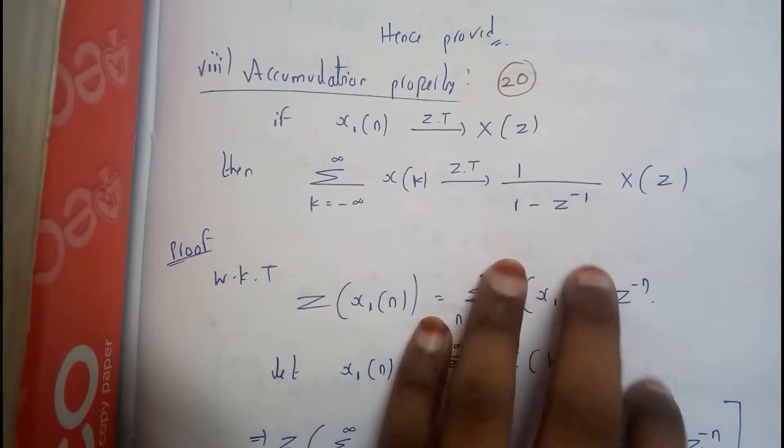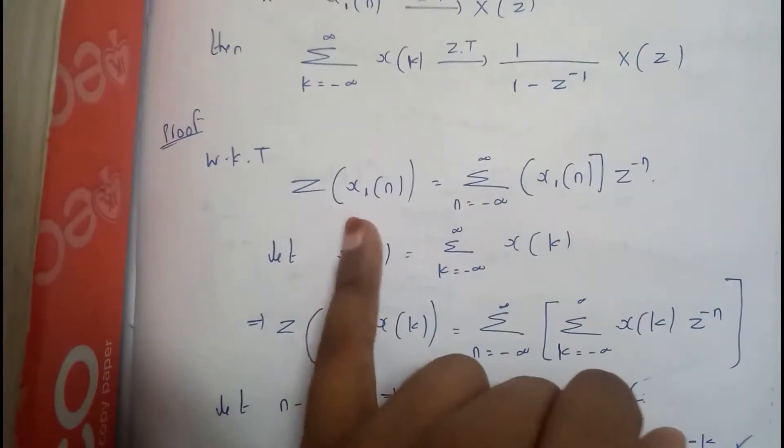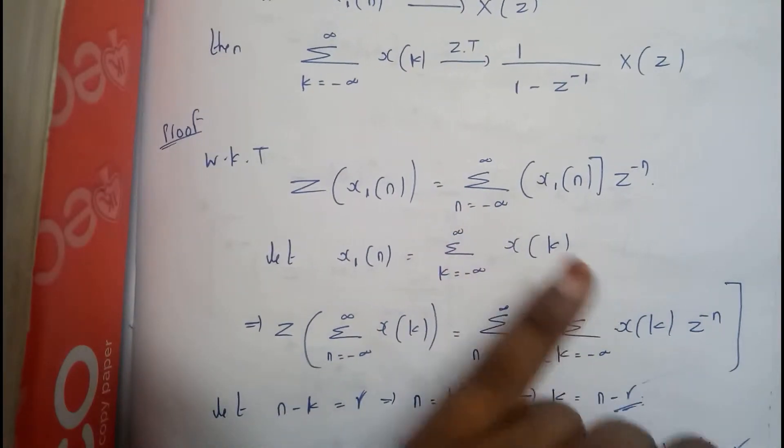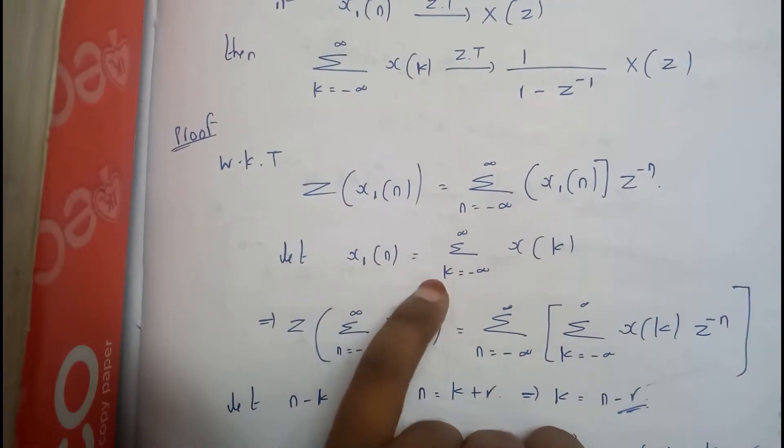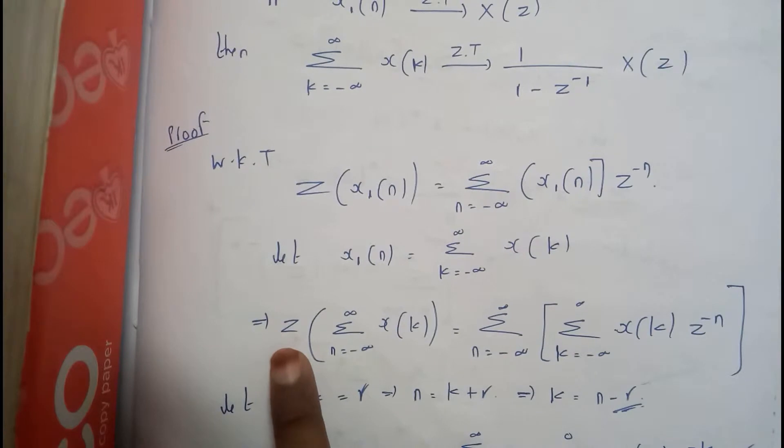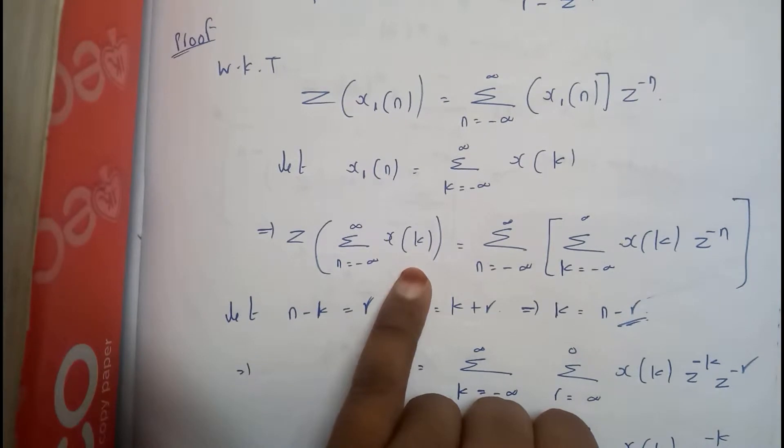So it seems to be really simple and easy. Now let us go through the proof. We know that Z{x₁(n)} equals sigma n equals minus infinity to infinity of x₁(n) times z⁻ⁿ. Let x₁(n) equal sigma k equals minus infinity to n of x(k). So Z is nothing but sigma n equals minus infinity to infinity of x(k).